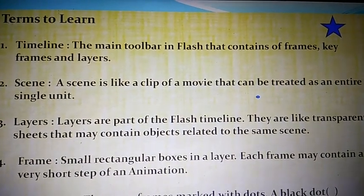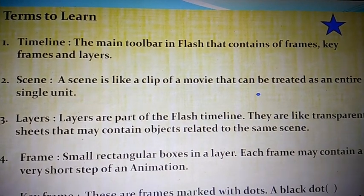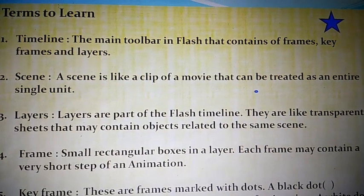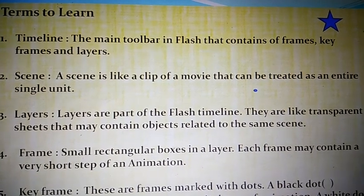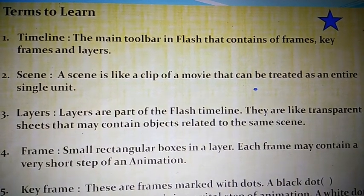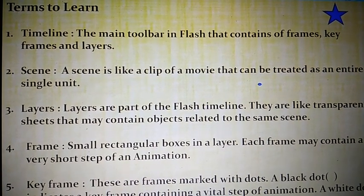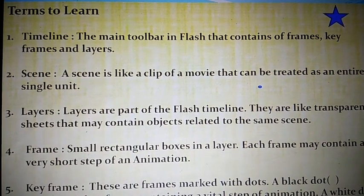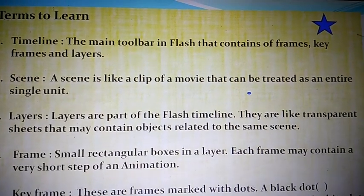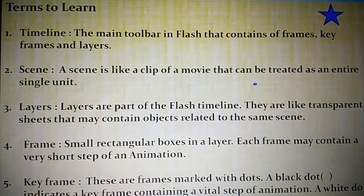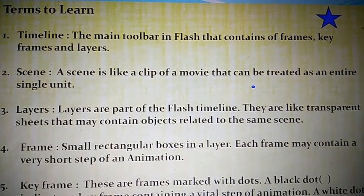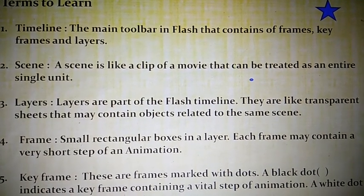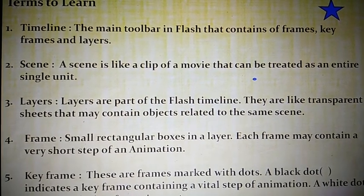Timeline means the main toolbar in flash that contains all frames, key frames, and layers. Second word: scene — a scene is like a clip of a movie that can be treated as an entire single unit. Third: layer — layers are a part of the flash timeline; they are like transparent sheets that may contain objects related to the same scene. Frame is a small rectangular box in a layer, and each frame may contain a very short step of an animation.